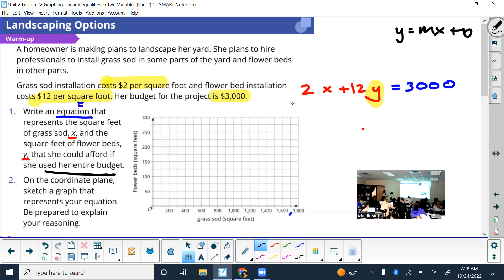The 2x. How do you get rid of it? Whatever you do on one side, good. So then that cancels. I have 12y.